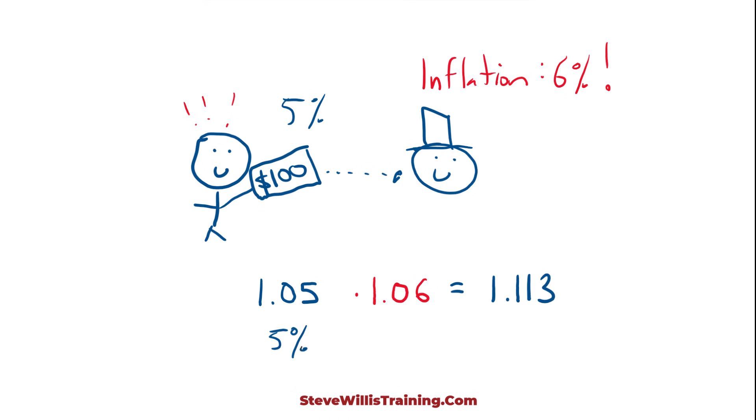If we take the 1s off, we have 5% — that is called the real rate, my required return on the loan. We have the 6% general inflation. This is the nominal rate: the rate adjusted for inflation, 11.3%. So I will need to charge 11.3% interest to ensure I meet my return, and that return is adjusted for inflation.